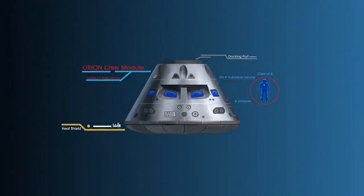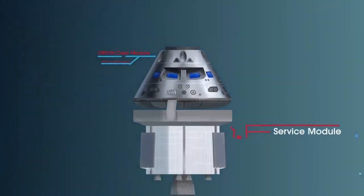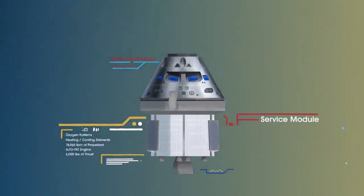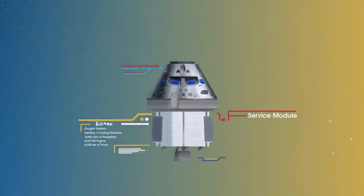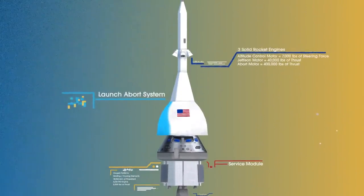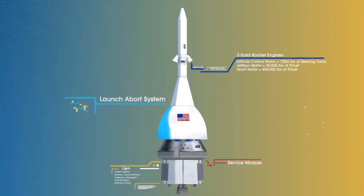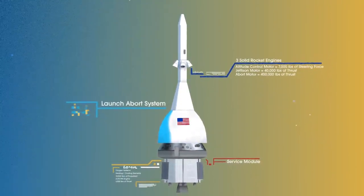The crew module, where up to four astronauts will live and work throughout the flight. The service module, with life-support systems for the crew and its own engine and fuel reserves, and a launch abort system, with engines capable of pulling the crew module to safety during launch should anything go wrong.